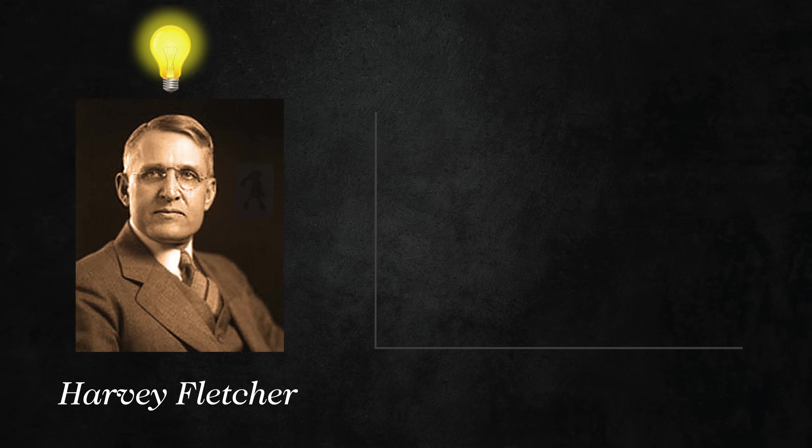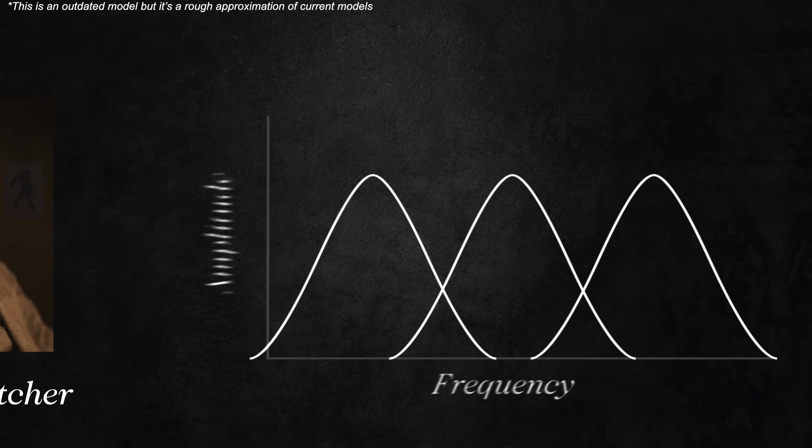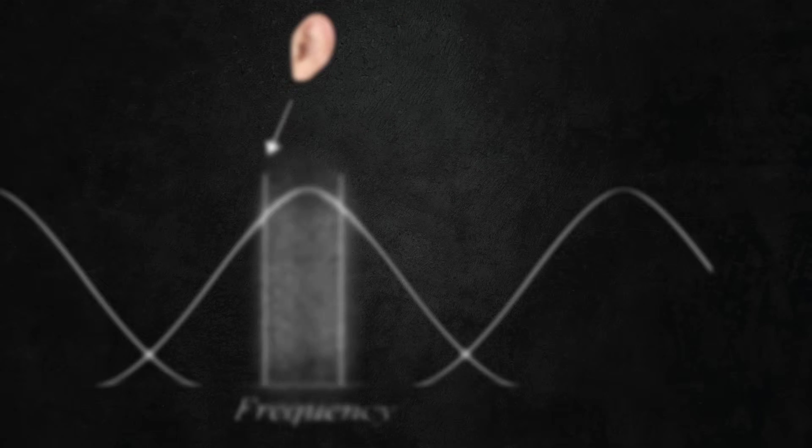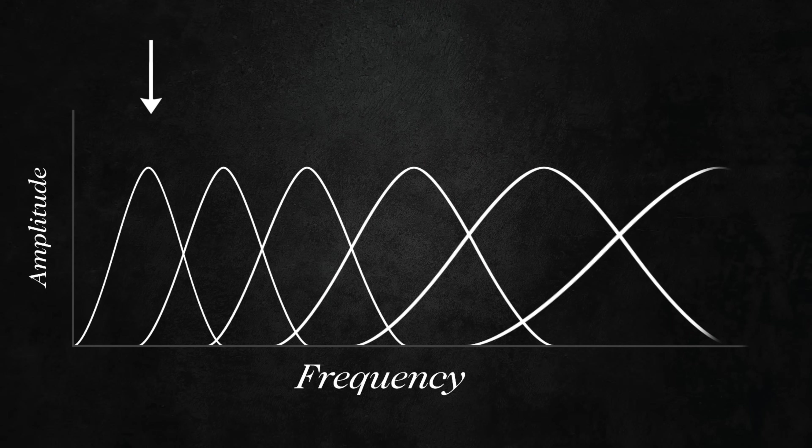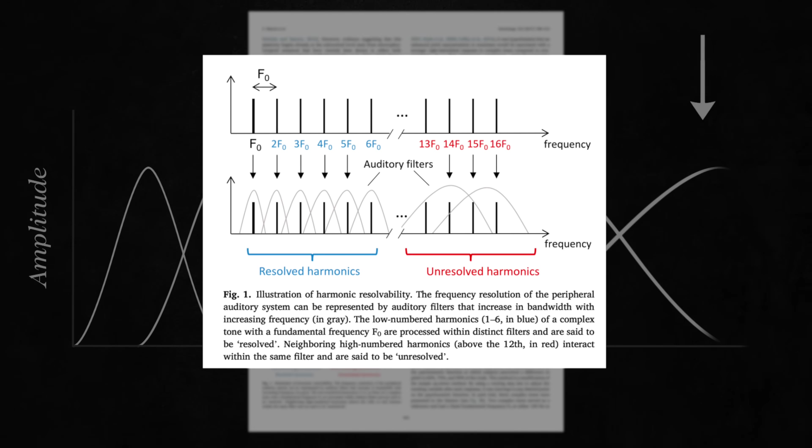If two tones are in the same band, we'll have trouble telling them apart. For higher and higher frequencies, the bandwidths of these tiny filters increase. And this means it's harder for our ears to lock onto higher harmonics when there's other frequencies around.